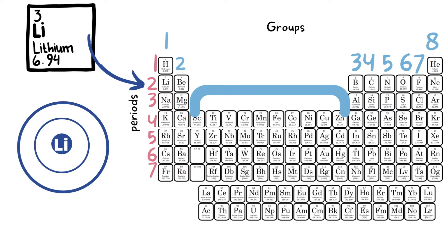How do we know how many electrons lithium has? We know this because the atomic number is three, and since the number of electrons is equal to that, we are going to fill this atom with three electrons — two in the first shell and one in the valence shell, or the last shell.